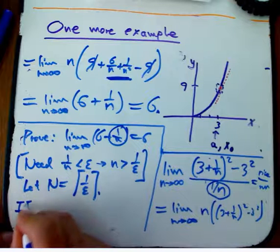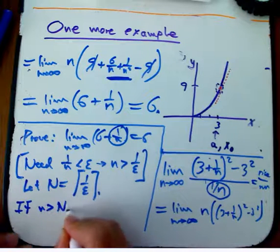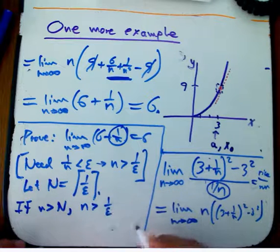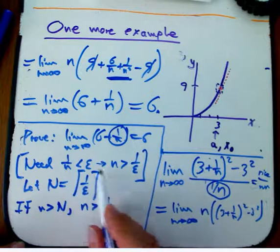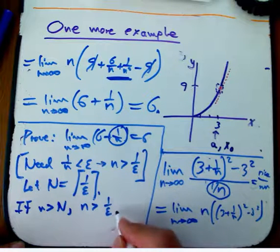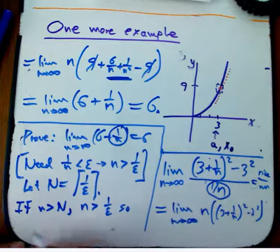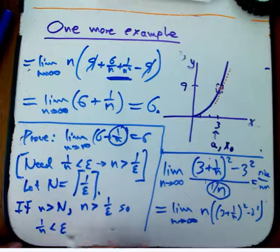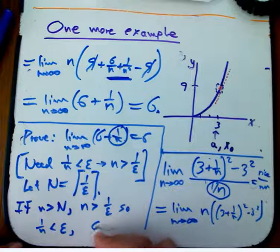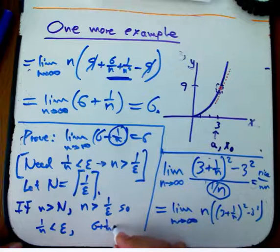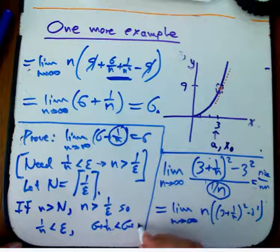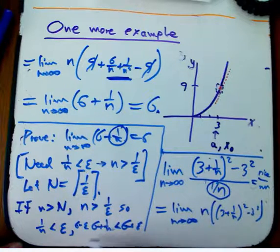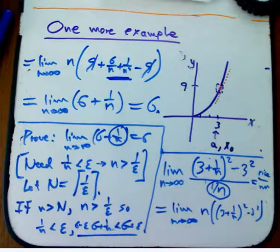So let N be the ceiling of 1 over epsilon. So if little n is after the waiting time, then certainly n is greater than 1 over epsilon, because it's bigger than something that's the ceiling of 1 over epsilon, so yeah, we're good. Okay, and so we just invert this. So 1 over n is less than epsilon, and so 6 plus 1 over n is between 6 plus epsilon and 6 minus epsilon. And that's what we want. Okay, and we're done.